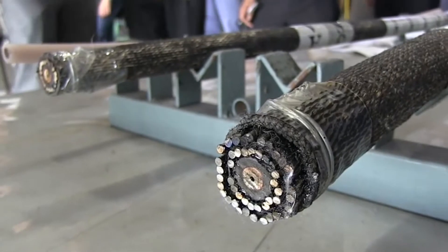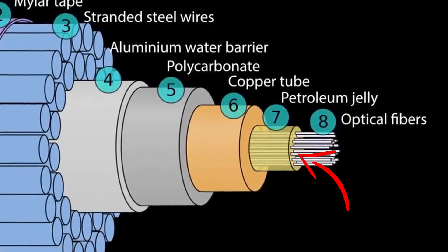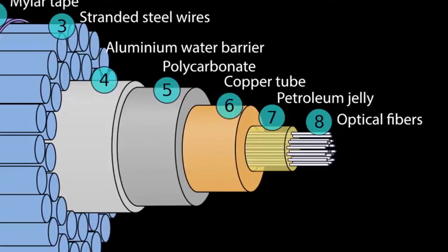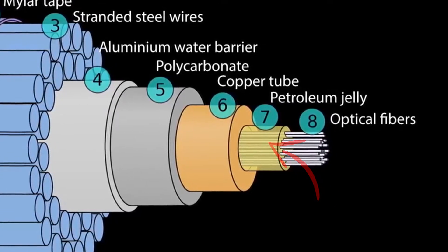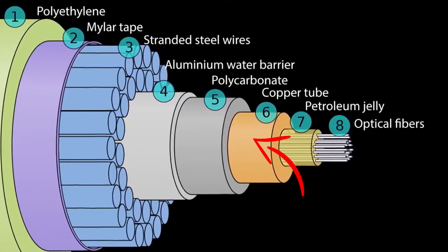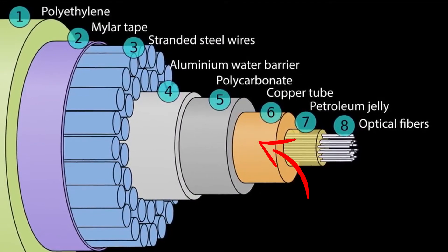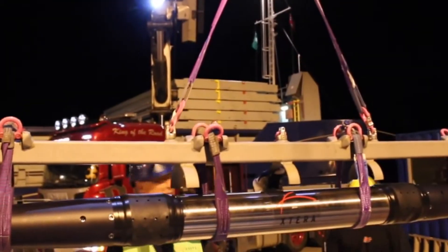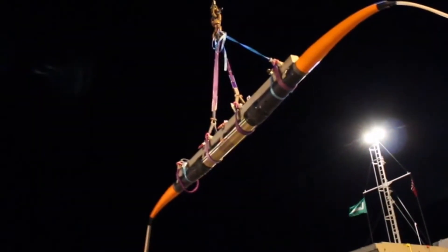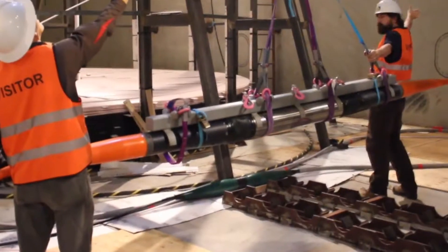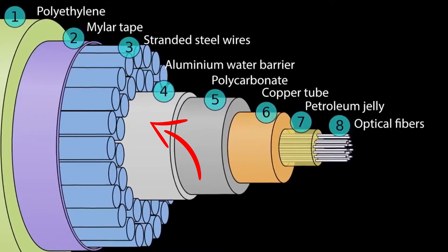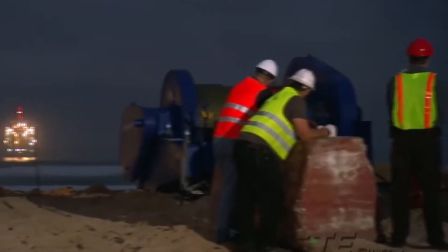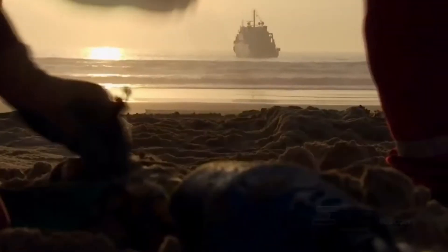The layers of fiber optic cables planted under the sea include: first, the cable core; next, a petroleum gel layer which keeps the optical fiber in place during bending or pulling; then a copper tube layer that provides protection and power to amplify the signal every 50 miles via a repeater. Further outer layers include polycarbonate, aluminum water barrier, thick steel cable, mylar tape, and tar coating.